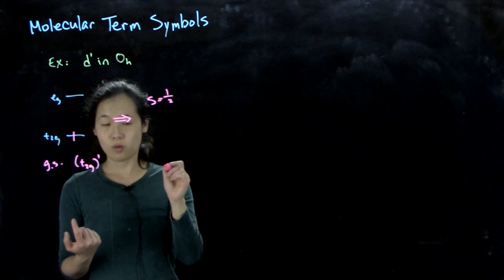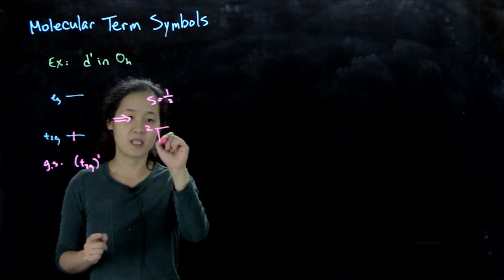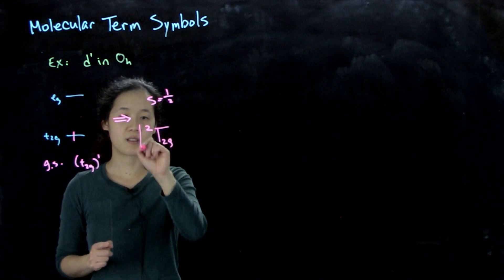So our term symbol is 2s plus 1, which is going to be 2, and then the symmetry of the orbital, so it's doublet t2g. So this is our ground state term symbol.